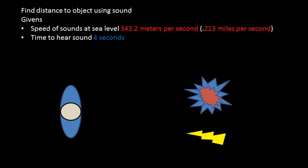So we have our two givens. The speed of sound of 343.2 meters per second, or 0.213 miles per second if you're thinking imperial. We also have the time between flash and bang, which is 4 seconds.